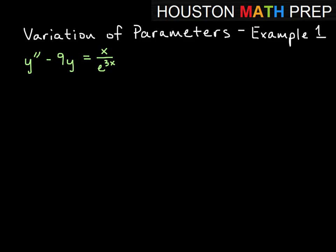Here's our first example problem using variation of parameters method. So we have a second order non-homogeneous equation, y double prime minus 9y equals x over e to the 3x.